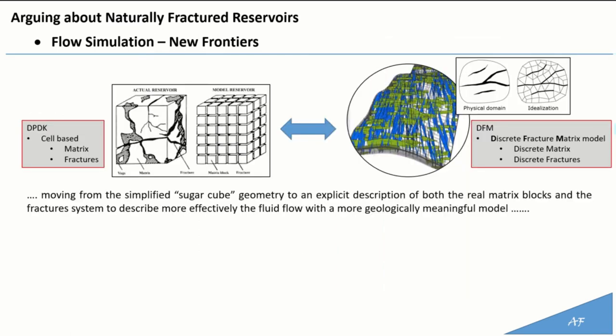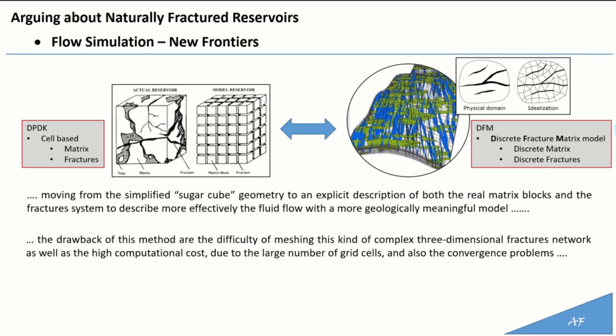The new frontier would be moving from the simplified sugar cube geometry to an explicit description of both the real matrix blocks and the fracture system, to describe more effectively the fluid flow with a more geologically meaningful model. The drawbacks of this method are the difficulty of meshing this kind of complex three-dimensional fracture network, as well as the high computational cost due to the large number of grid cells.